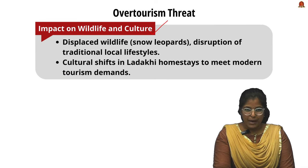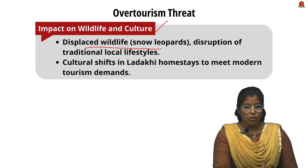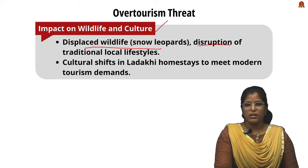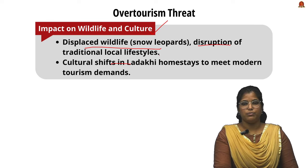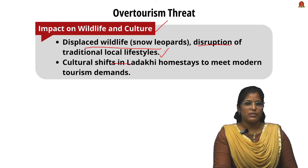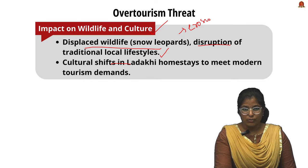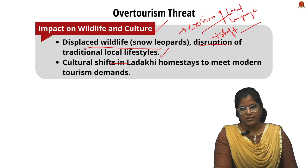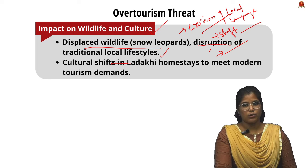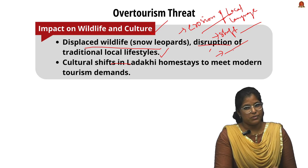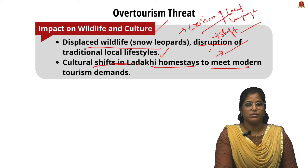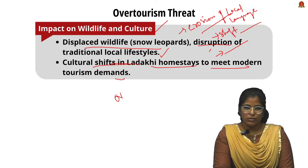Over-tourism also impacts wildlife and culture. Snow leopards, endemic to Ladakh, get displaced due to frequent tourist encounters. The traditional local lifestyle — closely connected to Buddhist and monarchical heritage — is being compromised, leading to erosion of local language, shifts in the celebration of local traditions, and even loss of traditional cuisine that tourists visit specifically to enjoy. Cultural shifts are visible in Ladakhi homestays adapting to modern tourism demands.